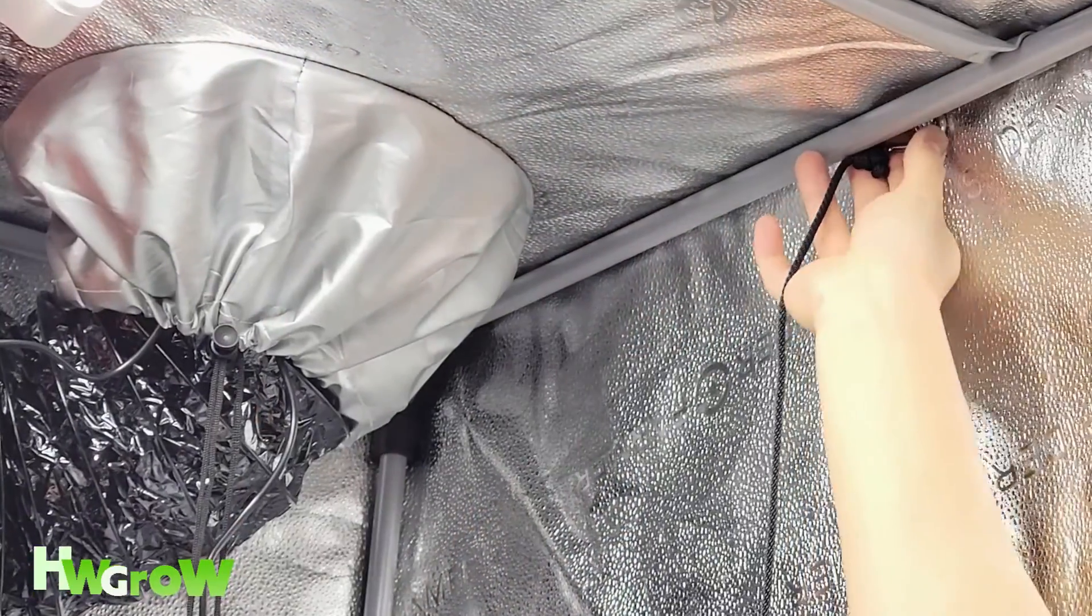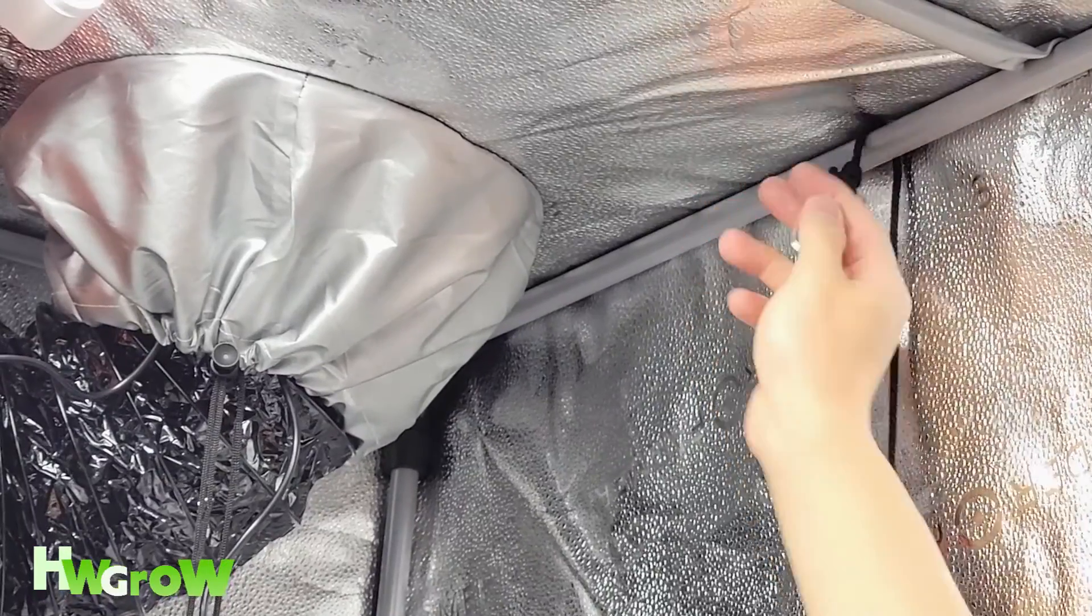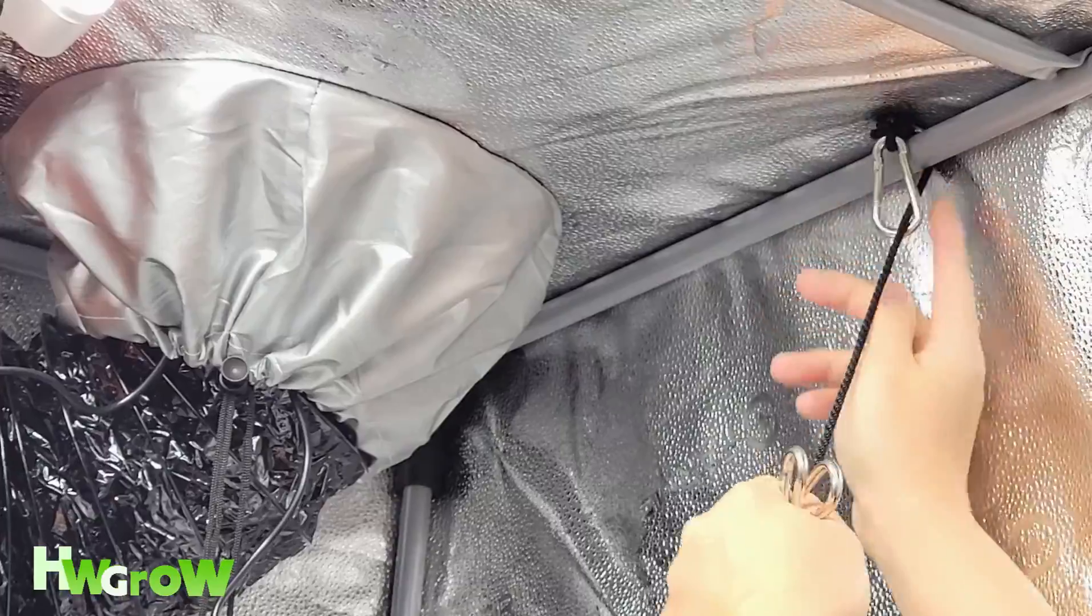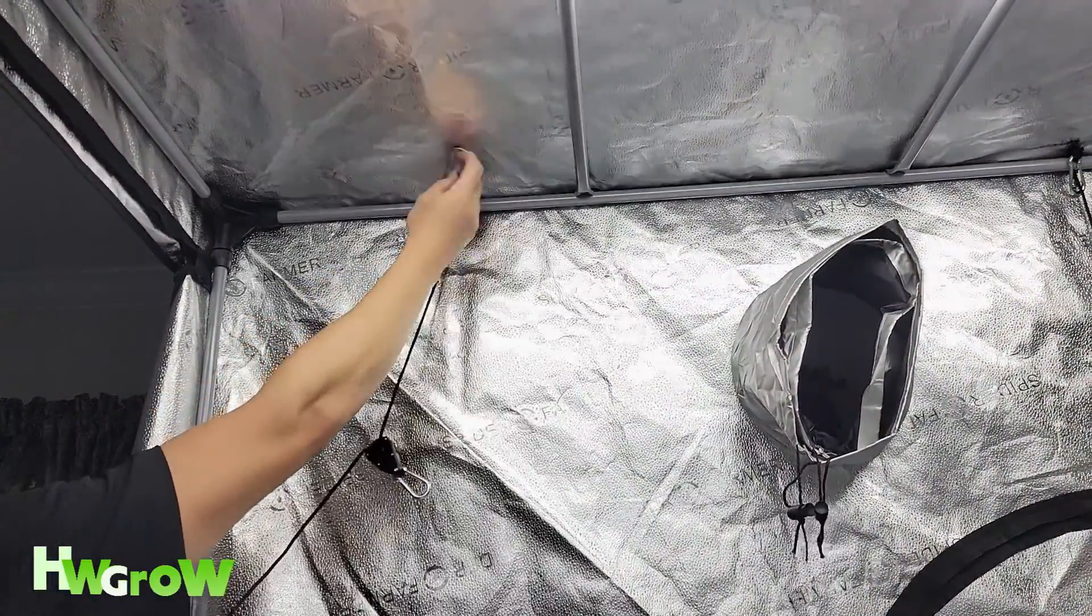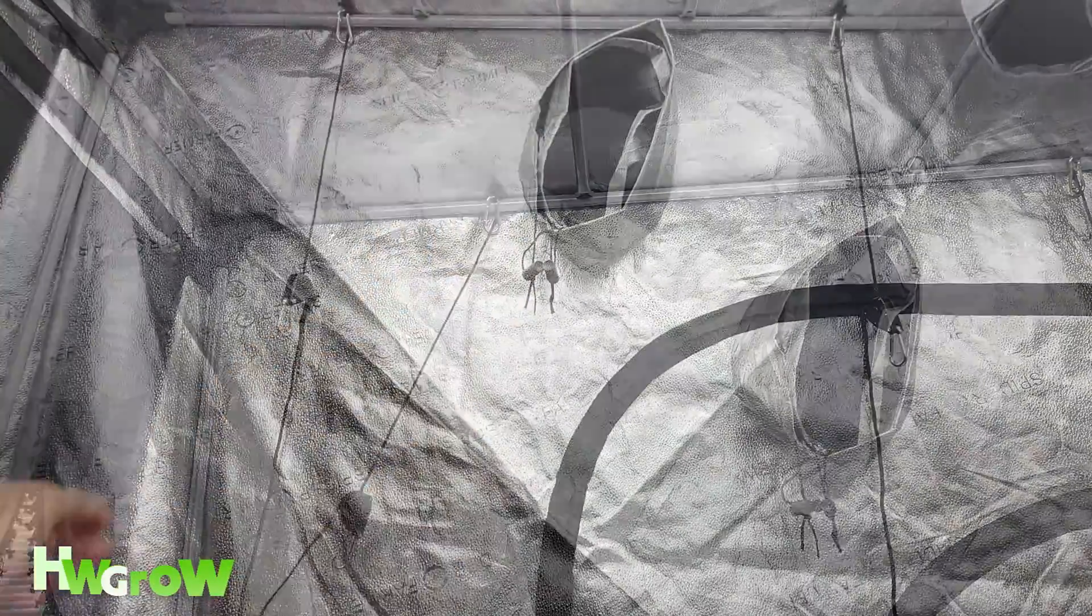Grab the clip that doesn't have the pulley attached and push it behind a top side pole, then clip it back onto itself. You want to do this with another hanger on the same pole, then the two remaining hangers on the pole on the opposite side.